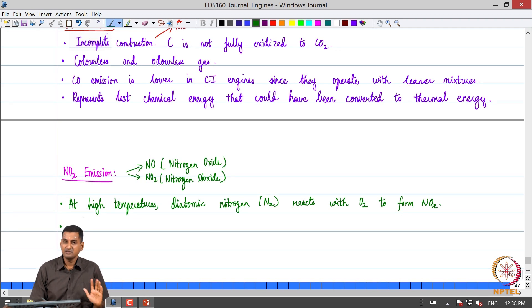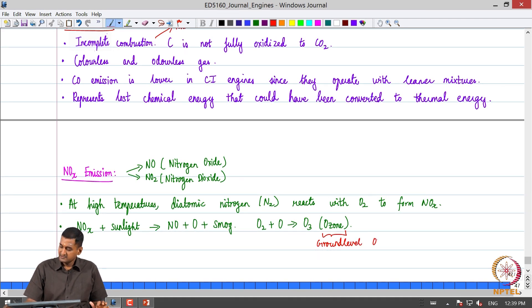What is the problem with NOx? NOx is harmful for the environment. When NOx takes in energy from the sunlight, it can essentially lead to NO plus O and smog. This monoatomic oxygen when it reacts with diatomic oxygen leads to ground level ozone. Ground level ozone is harmful, so this is also not very safe.